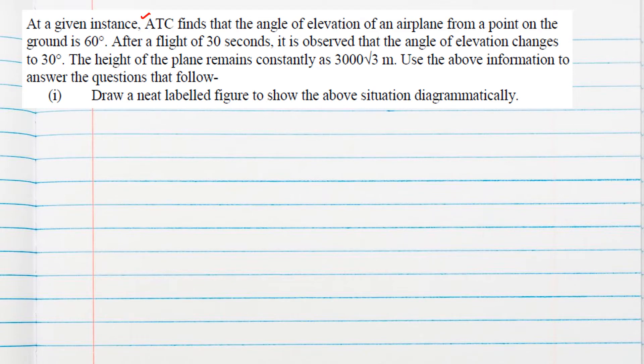ATC finds that the angle of elevation of an airplane from a point on the ground is 60 degrees. So suppose here is your plane, this is our first original position A. After a flight of 30 seconds, it is observed that the angle of elevation changes to 30 degrees, meaning the airplane is going far from us. Now it will be at position B after the 30 seconds flight, and the angle of elevation is now 30 degrees.